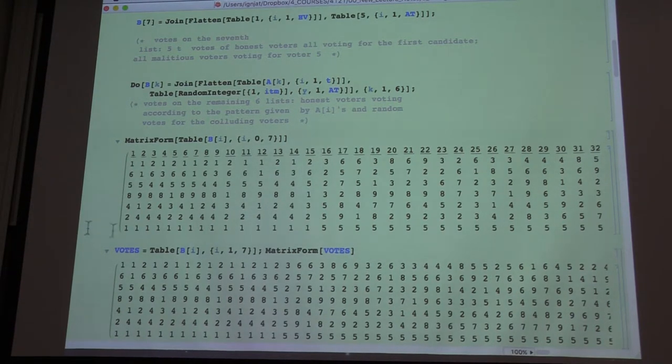And then you get three times as many voters that collude and they want to change the outcome of election. Instead of electing candidate number one, they want candidate number five to win.